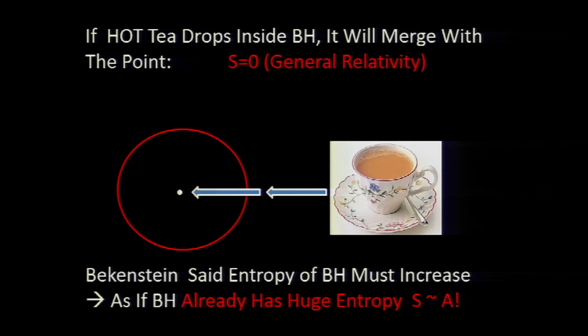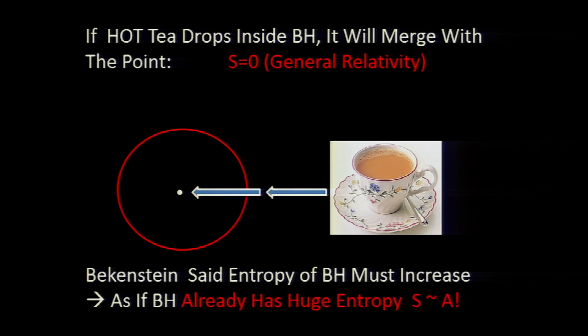Now consider a hot cup of tea falling inside a black hole. It will merge with the singularity, and the entropy of the black hole continues to be zero. Here is the problem: the hot cup of tea has a lot of entropy. Where did it go? Did it vanish from the universe? This is not allowed by the second law of thermodynamics.